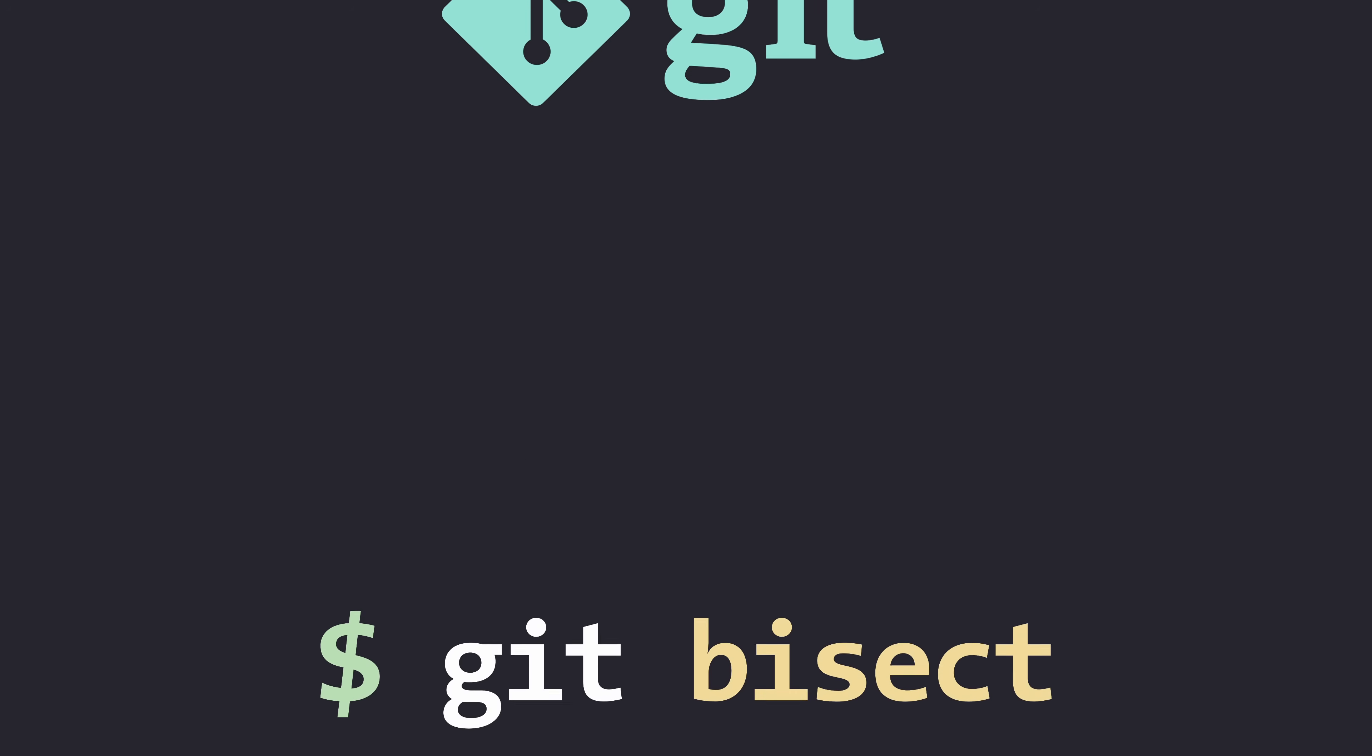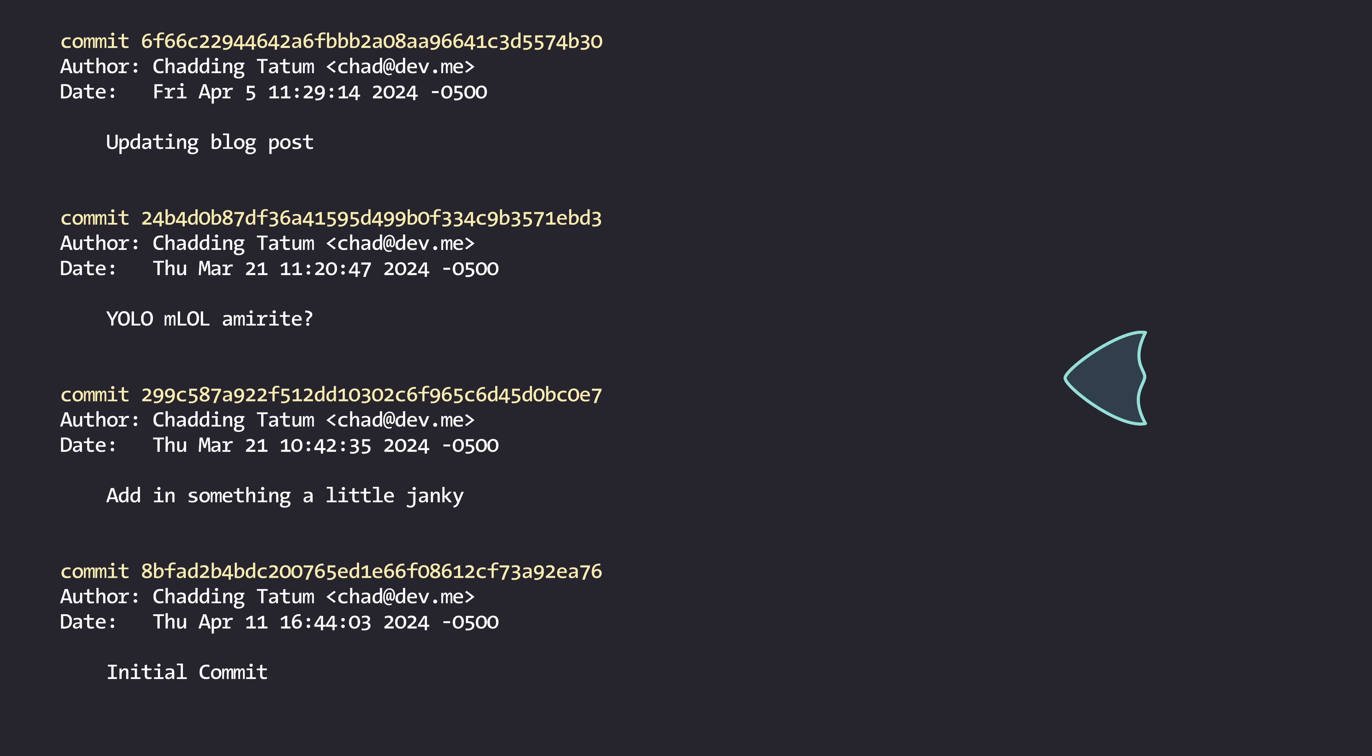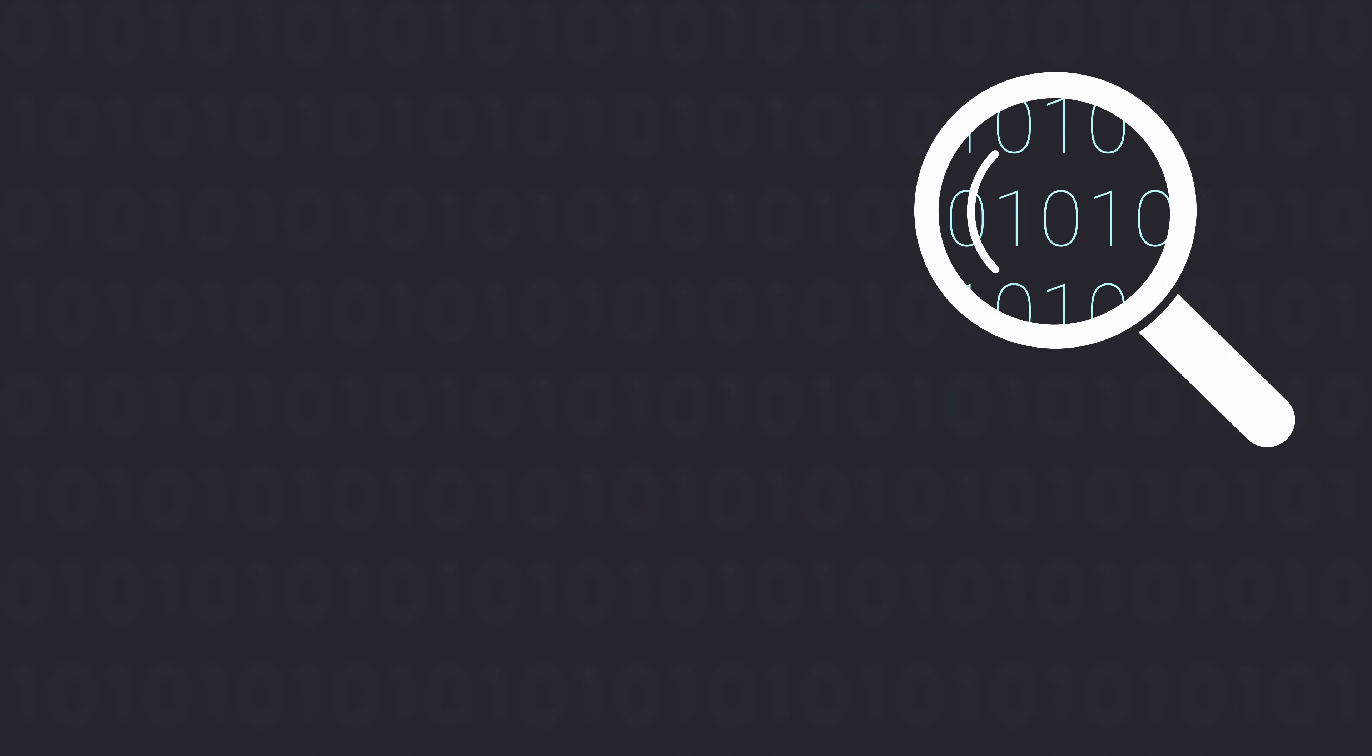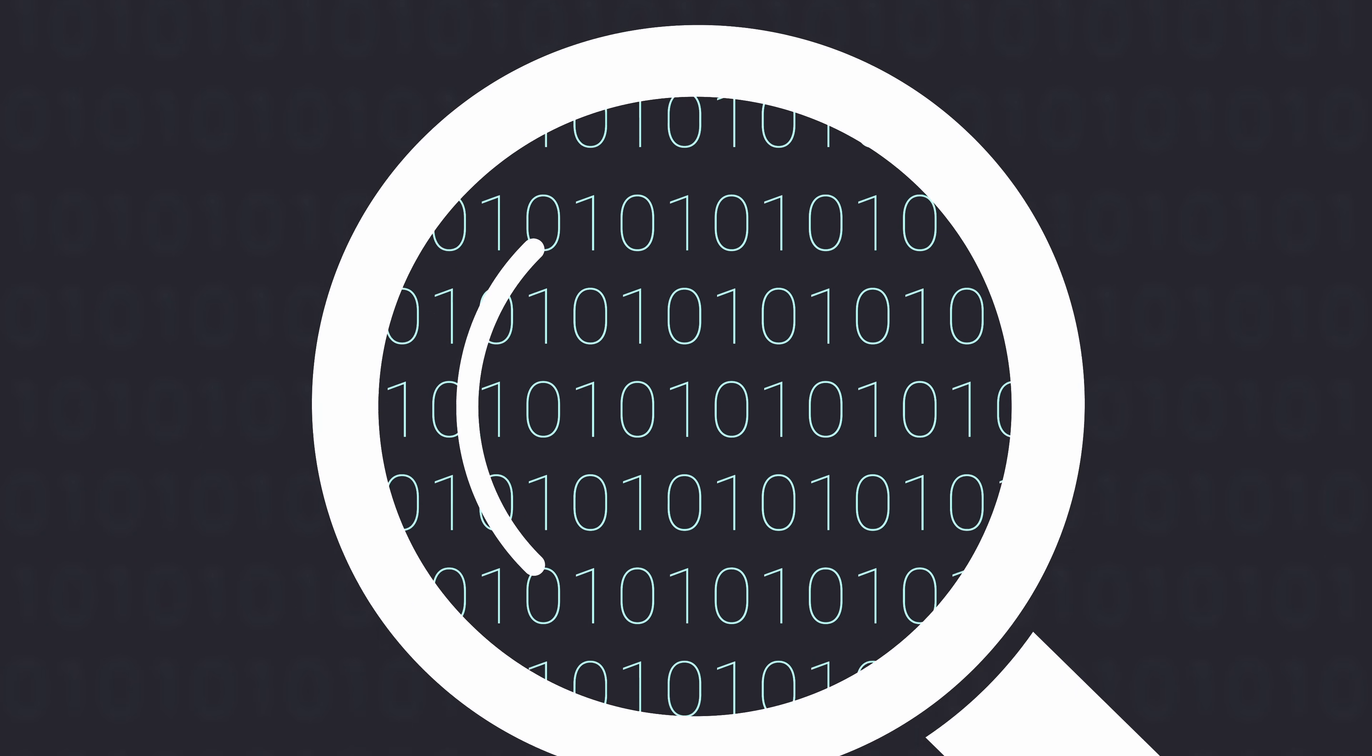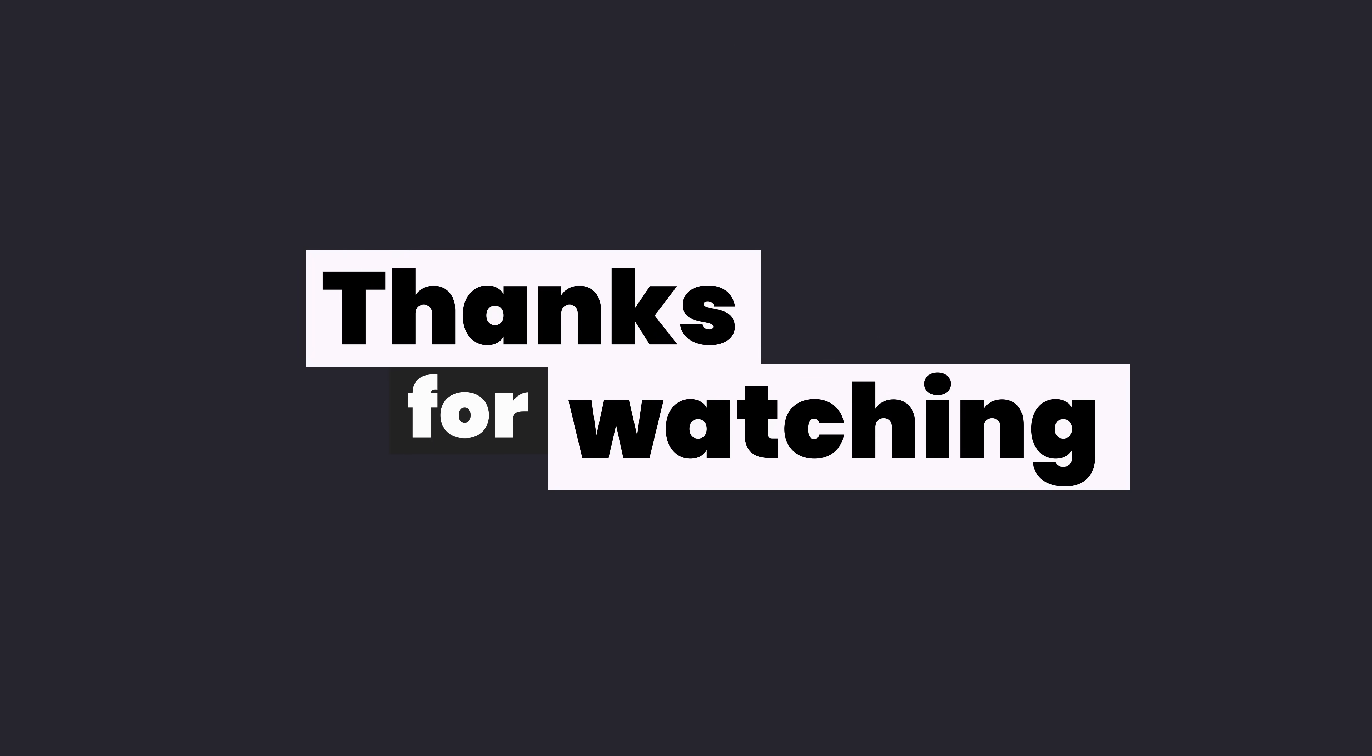This command enables developers to search through their git history, in order to find the commit where a bug, or a feature, depending on who you're asking, was added to a codebase. In the end, binary search allows us to perform efficient searching across large sets of data, and the ability to do that in today's modern world is incredibly important.